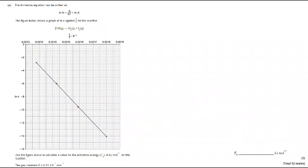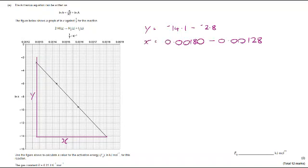Let's move on to part E. We've got the Arrhenius equation here that has been provided up at the top, always will be. Figure shows a graph of log K against 1/T. We've been given R as 8.31, which you'll recognize from the ideal gas equation as well. Use the figure above to calculate a value for the activation energy. I have got here my structure lines so I can work out the gradient. I've got Y and I've got X. I am going to have to read this graph very carefully. Y, I can see I'm going from -14.1 to -2.8. And on X, I'm going from 0.00180 to 0.00128.